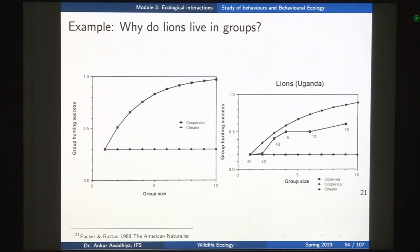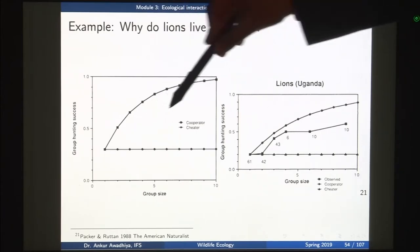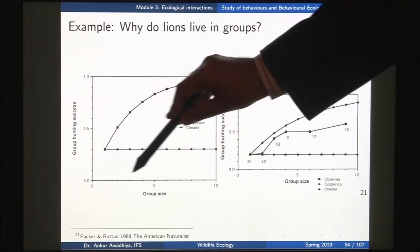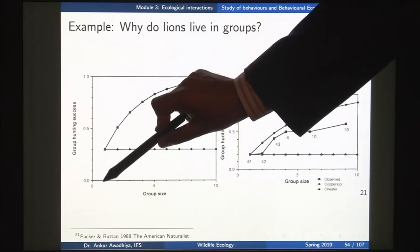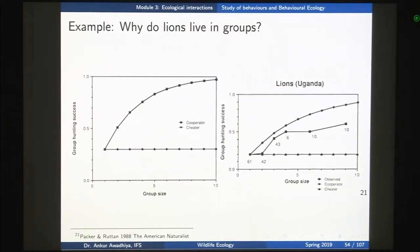Another example is why do carnivores live in groups. Here we consider a theoretical case with lions: the x-axis shows group size and the y-axis shows group hunting success — essentially the probability that a group of a particular size going for a kill will be able to kill the prey and get the food.